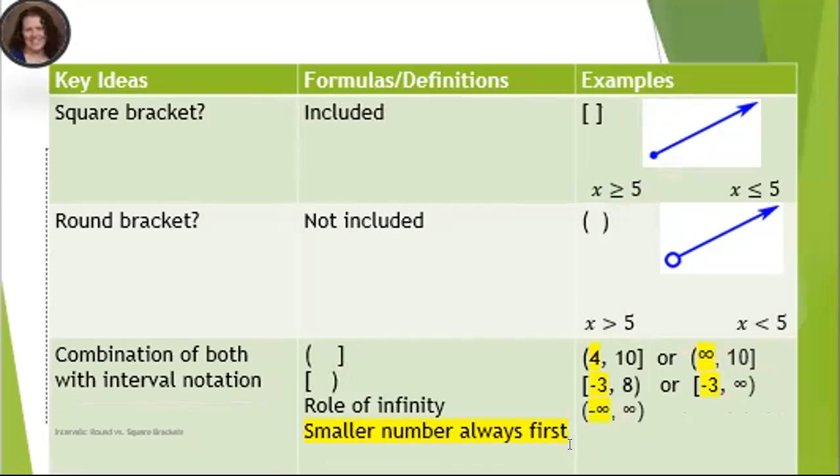And also note that the smallest numbers always go first. So in all of my intervals, 4 is the smaller number in the first one, negative 3 is the smaller one, negative infinity to 10 - negative infinity is the smaller one, negative 3 is the smaller one here as well.